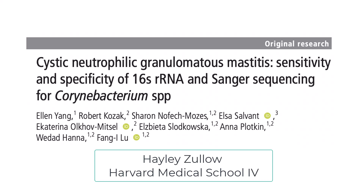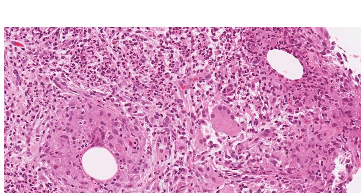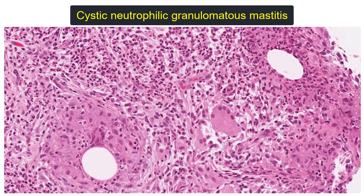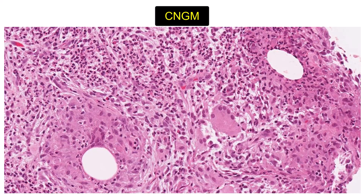This video will review an original research article from the Journal of Clinical Pathology titled 'Cystic Neutrophilic Granulomatous Mastitis: Sensitivity and Specificity of 16S Ribosomal RNA and Sanger Sequencing for Corynebacterium Species.' This article is related to the entity of Cystic Neutrophilic Granulomatous Mastitis, abbreviated to CNGM.